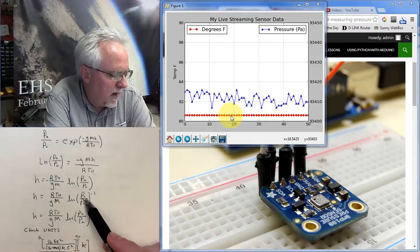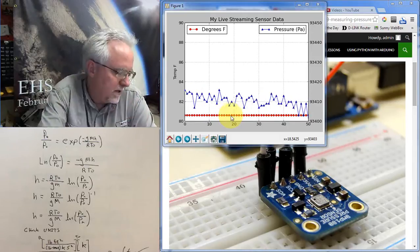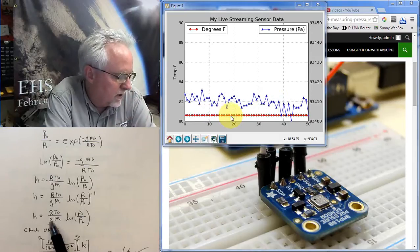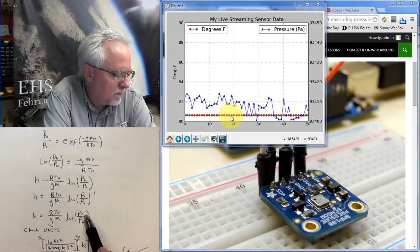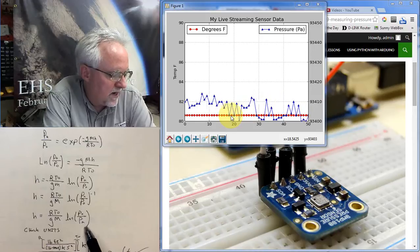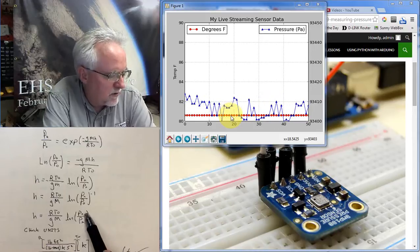and so I can make it H is equal to RT over gm, natural log of P0 over pH. And let's see, remember P0 was,